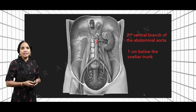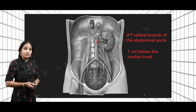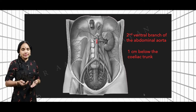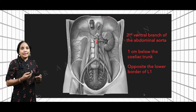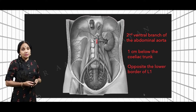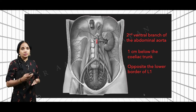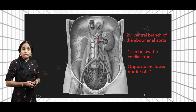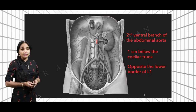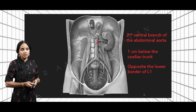Further down from the superior mesenteric artery, we have the inferior mesenteric artery, which is a topic for another day. Regarding its surface marking, the superior mesenteric artery originates opposite to the lower border of L1, that is the first lumbar vertebra.